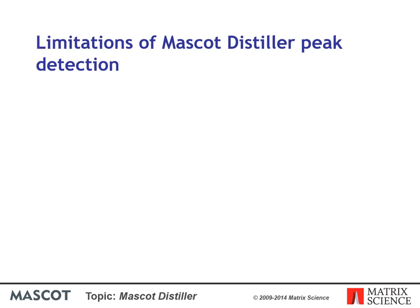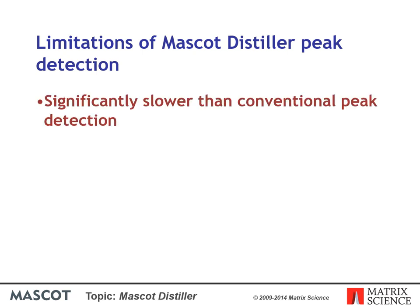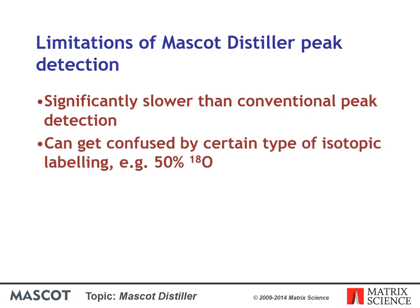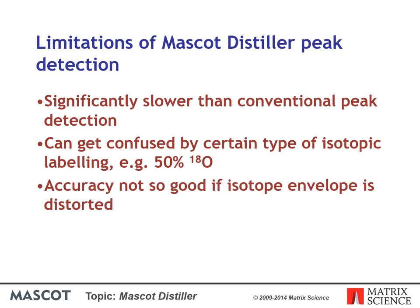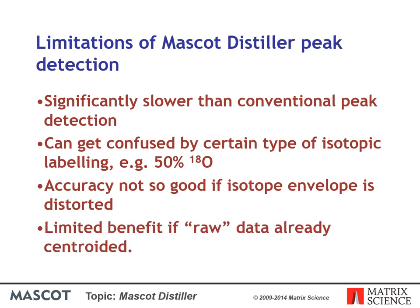Of course, nothing is perfect, so here are some of the weaknesses. It's significantly slower than conventional peak detection. It can get confused by certain types of isotopic labeling, for example 50% O18. Accuracy is not so good if the isotope envelope is distorted for any reason. And it's of limited benefit if the raw data has already been centroided.